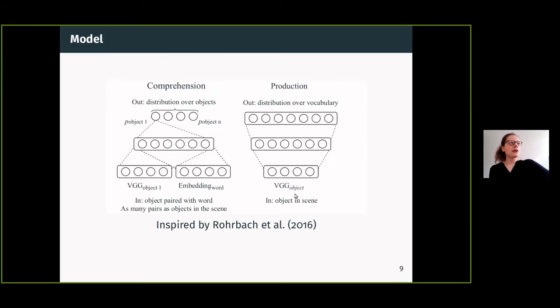To go a little bit more technical for those of you who are familiar with how neural networks work, basically what we do is we have word embeddings that are random at the start, and we concatenate them with a VGG representation for every object in the scene.